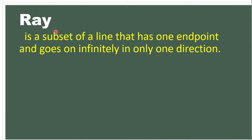Next is ray. A ray is a subset of a line that has one endpoint and goes on infinitely in only one direction. So it has only one endpoint and extends infinitely in one direction.